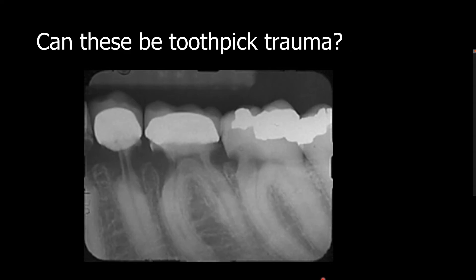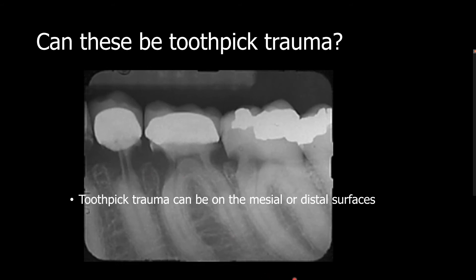Can these tooth structure losses be from toothpick trauma? Toothpick trauma can be on the mesial and distal. However, toothpick trauma will also damage the alveolar crest. The tooth is much harder than the alveolar bone, so it is not possible that the toothpick will only damage the tooth and spare the bone.